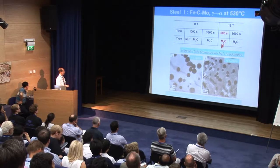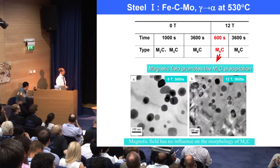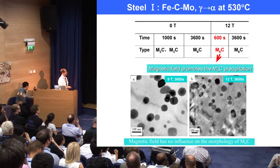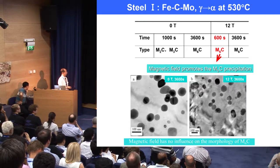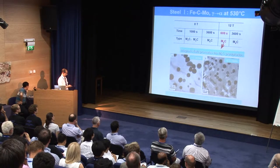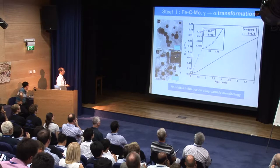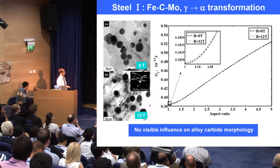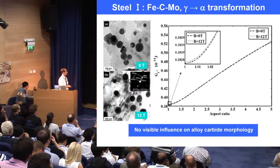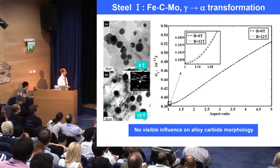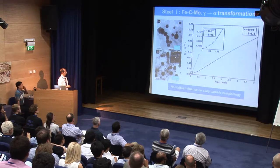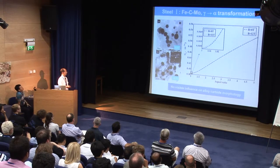From these two images, we do not see any obvious change in morphology by the magnetic field. We also calculated the aspect ratio considering the demagnetization factor of austenoid carbides with the presence and absence of high magnetic field. Results show that the aspect ratio of austenoid carbides equals 1. That is to say, the high magnetic field has no obvious effect on austenoid carbide morphology.